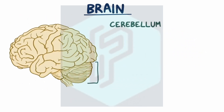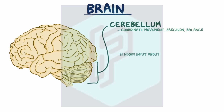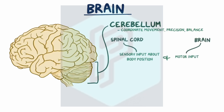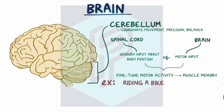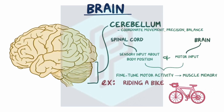Next, there's the cerebellum, which sits down at the base of the skull. The cerebellum helps with coordinating movement, precision, and balance. It receives sensory input about body positioning from the spinal cord and motor input from the brain, integrating them to fine-tune motor activity and store it as muscle memory. An example is riding a bicycle — something you can typically do pretty easily even if you haven't done it since you were a kid.